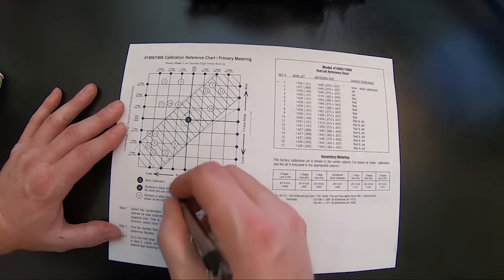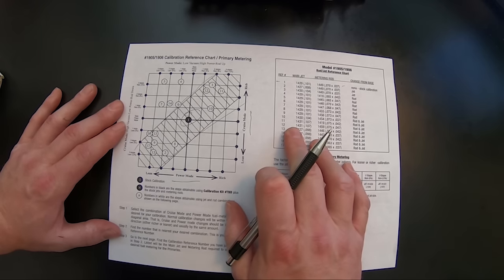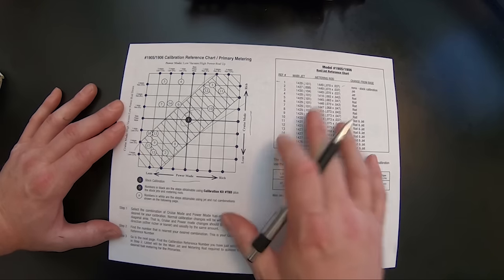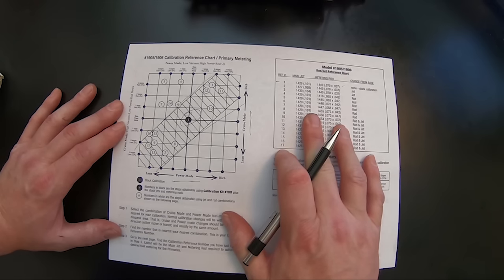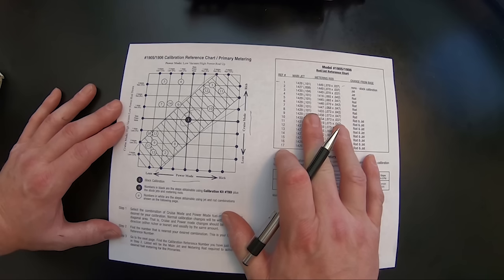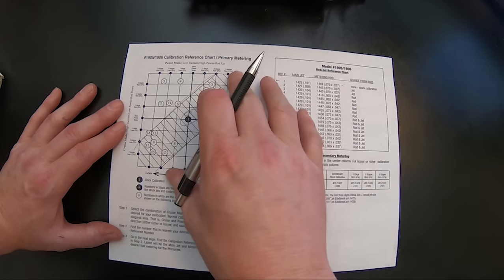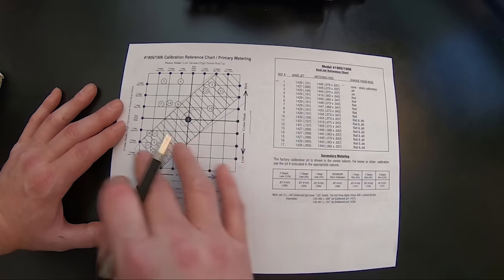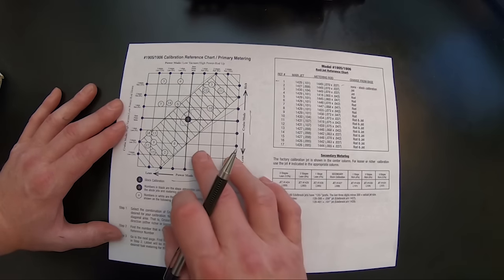There's two modes to this. There's the cruise mode and there's the power mode. So as you're driving the vehicle, once you got everything else set and you notice a hesitation, a stumble, maybe it just doesn't have as much power as you think it is, this chart right here will tell you how to adjust the carburetor from there. So let's take an example here.